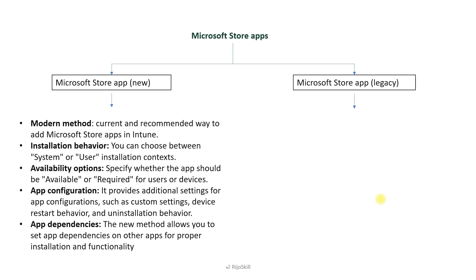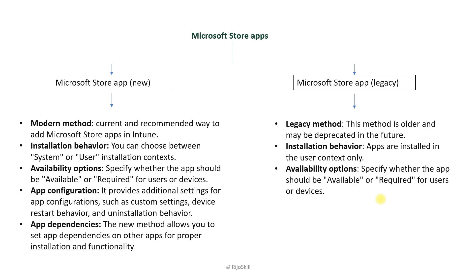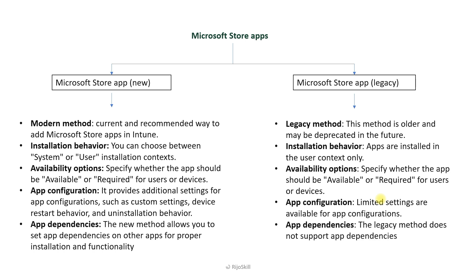The Microsoft Store App legacy method is older and may be deprecated in the future. Apps are installed in their own context only. Availability options specify whether the app should be available or required for the user or device, but limited settings are available for app configuration. The legacy method does not support app dependency.